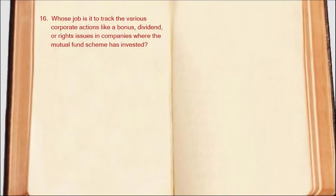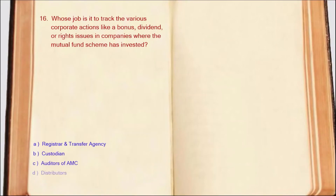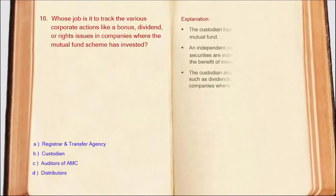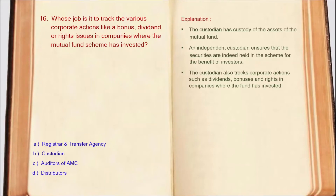Next question: Whose job is to track various corporate actions like bonus, dividend, or rights issues in companies where the mutual fund scheme has invested? The custodian holds mutual fund assets in custody and ensures that no asset is used against investors' benefit. The custodian also tracks dividends, bonus, and other corporate actions in companies where the mutual fund has invested. So the correct answer is Option B: Custodian.